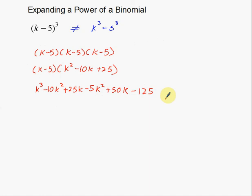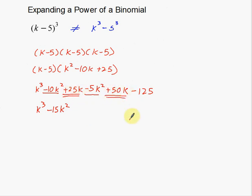Now combine like terms. K to the third is all by its lonesome. For the squared terms: negative 5K squared and negative 10K squared — that's negative 15K squared. For the K terms: 25K and 50K give 75K — remember, the coefficients increase, not the exponents; the exponents stay the same. And finally negative 125. That's how you expand a power of a binomial.